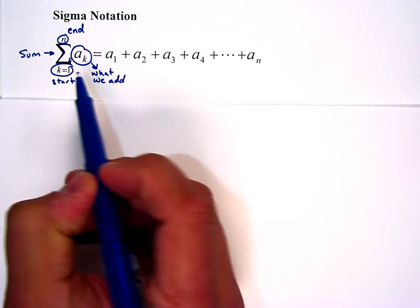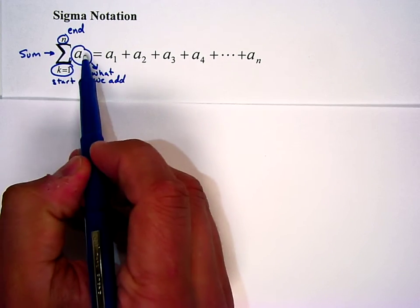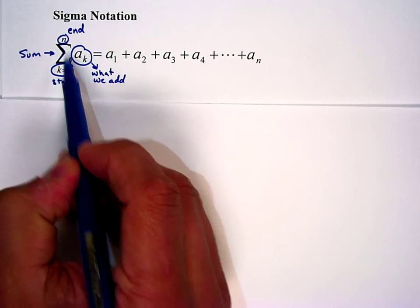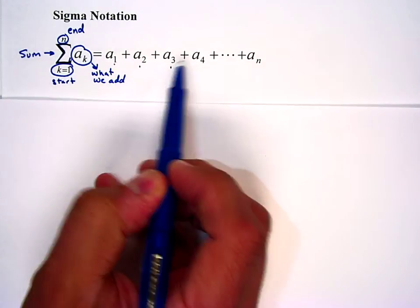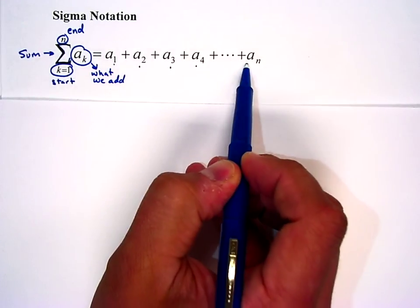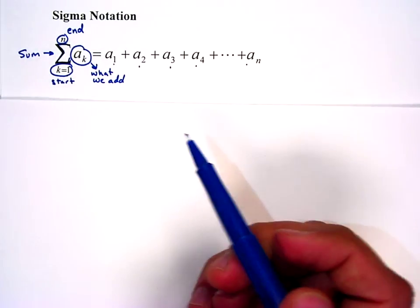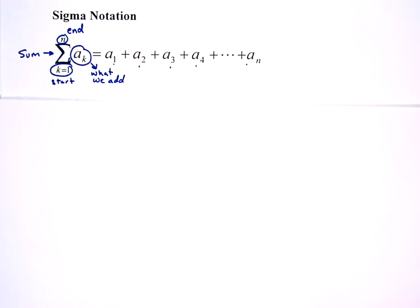So you can see right here that this sigma of a sub k from 1 to n is the sum of a sub 1 plus a sub 2 plus a sub 3 plus a sub 4 all the way until we get to a sub n. Looks very confusing, but I guarantee it will be a piece of cake once we start doing a problem.